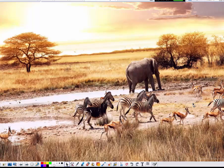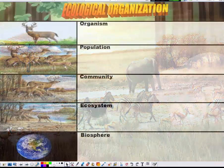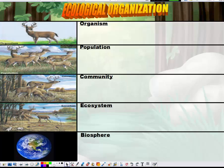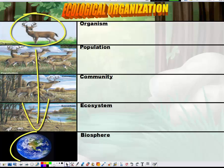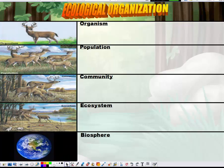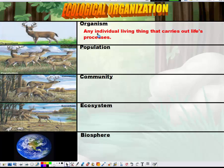Let's quickly go over the organization of an ecosystem. When talking about ecological organization, you go from a single organism all the way up to what's called the biosphere. In an ecological organization hierarchy, the base level is an organism — any individual living thing that carries out life processes. In short, an organism is just any living thing found in an ecosystem.